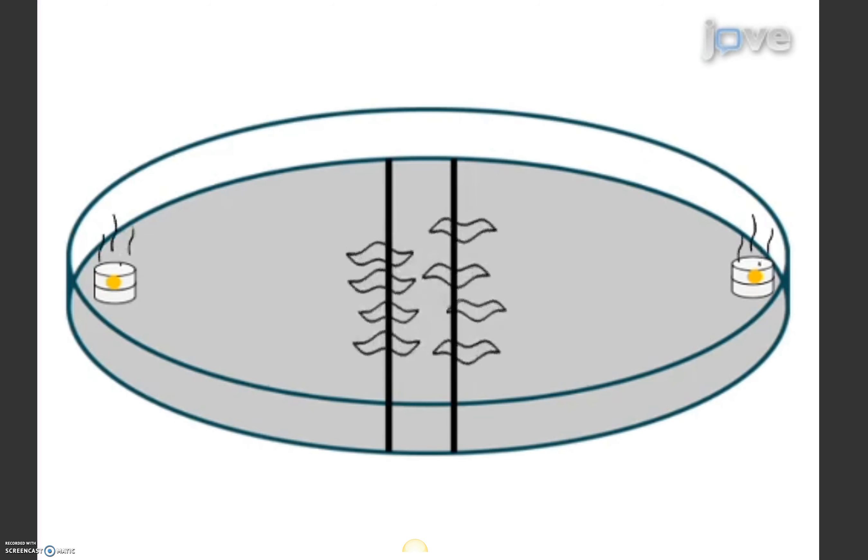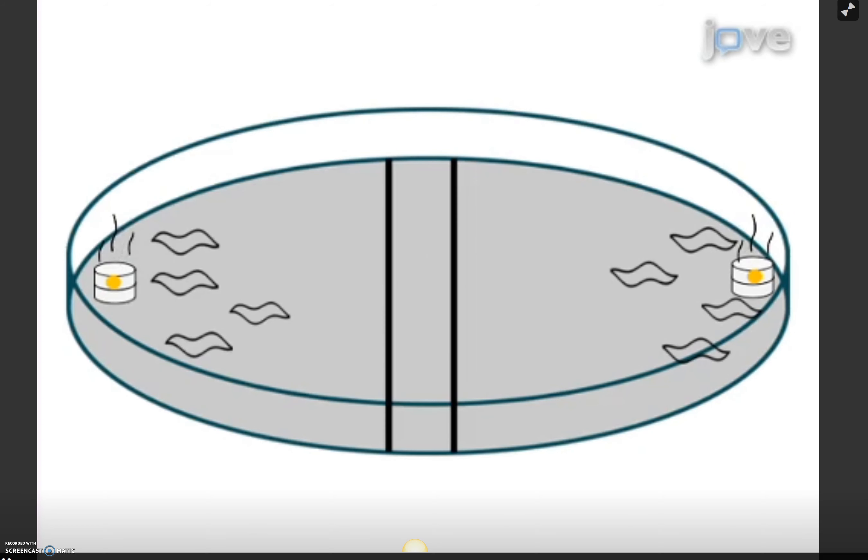Next, the larvae are trained for 5 minutes on a petri dish with fructose as a reward, and an odor container on each side that contains 1-octanol as an olfactory stimulus.